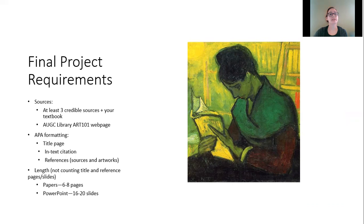You must have at least three credible sources plus your textbook. To help you find credible sources, in your classroom there's a link to the UAGC Library Art 101 webpage. You must also have APA formatting throughout your presentation — on your title page, in-text citations, and references. For papers that's six to eight pages, and for PowerPoint that's 16 to 20 slides, not including your title page or reference page.